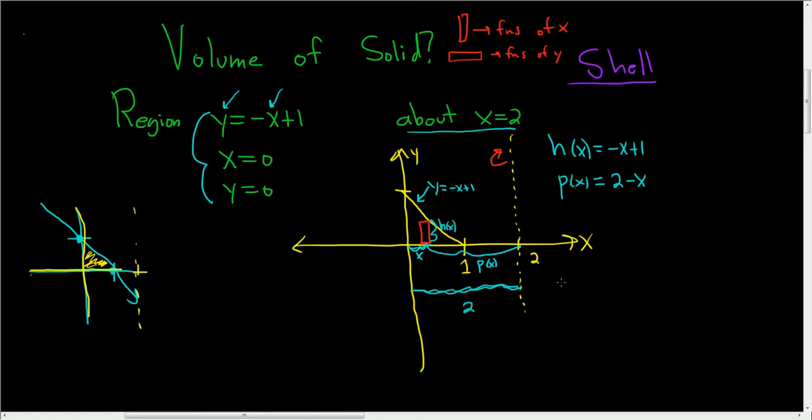So v is equal to 2 pi. And we're integrating with respect to x. So we're going from 0 to 1. And then the formula is p of x times h of x. So it's p of x h of x dx.